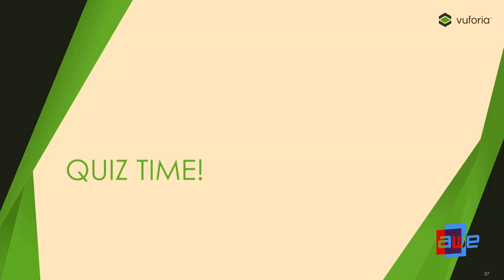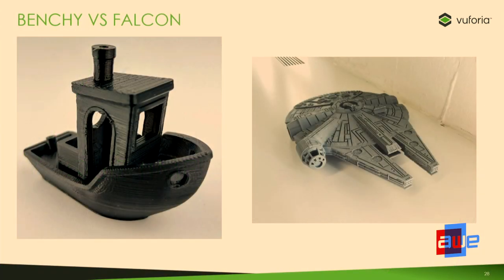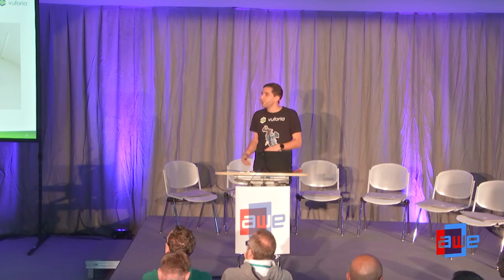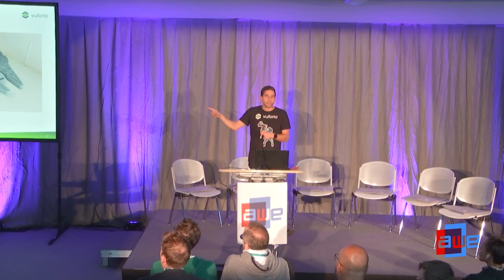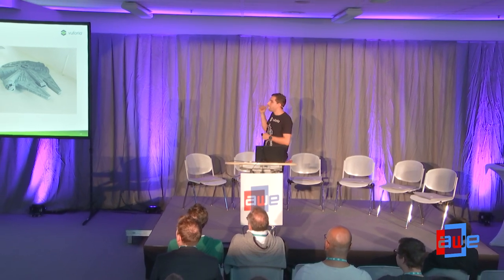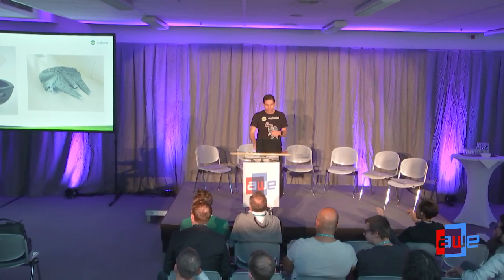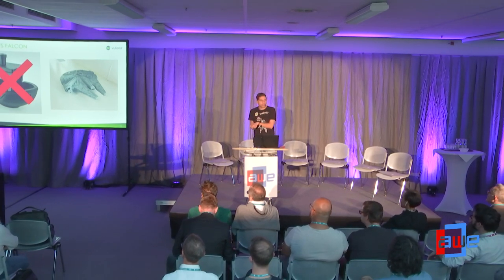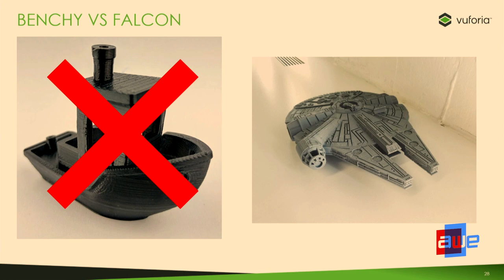Quick quiz! Here we have two 3D printed objects: Benji, the boat on the left, and the Millennium Falcon. Which would work better with model targets? The answer is the Millennium Falcon. Benji is small, which can cause focus issues, and it has a lot of rounded edges and not a ton of visual detail — especially compared to the geometric richness of the Millennium Falcon.